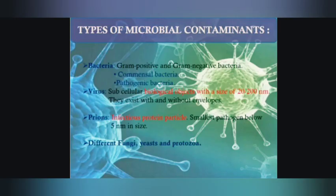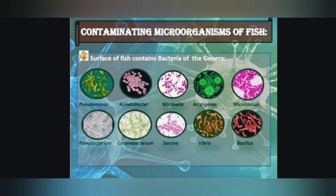The types of microbial contamination are divided into four categories: bacteria, viruses, prions, and different fungi, algae, protozoa and yeast. Bacteria are classified into two types based on surface and intestinal origin. On the skin of fishes, common bacteria include Pseudomonas, Micrococcus, Vibrio, and Bacillus. In freshwater fish, Streptococcus and Lactobacillus are common. In the intestine, Pseudomonas and Bacillus are more likely to be present.